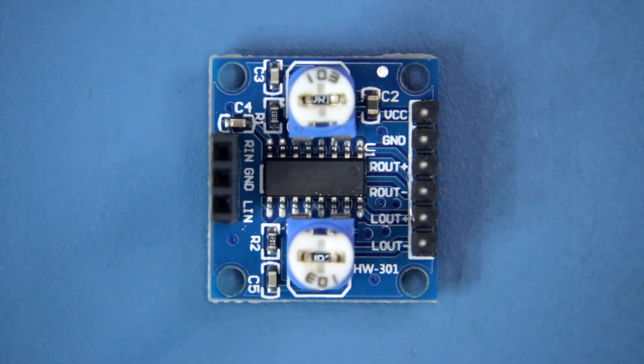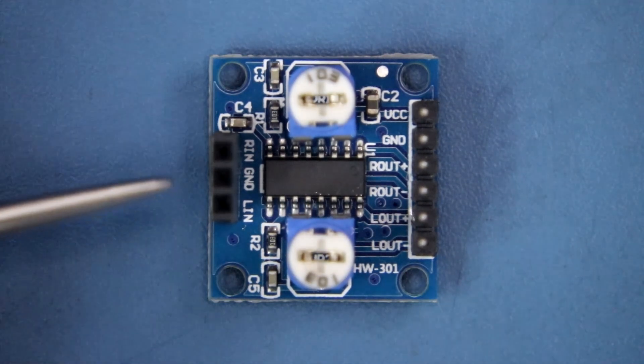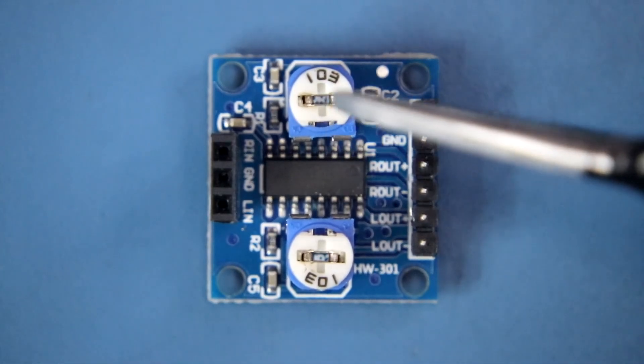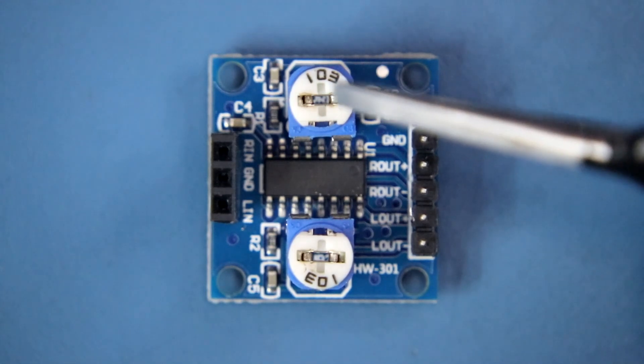PAM8406 is a class D audio amplifier. This side is for input and this side for the output. This potentiometer is to control the volume of the right speaker, and this one is to control the left speaker.